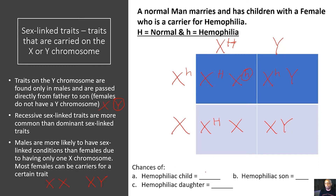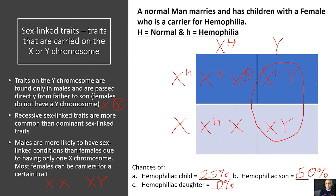The chances of having a hemophiliac child is a 25% chance — 1 out of 4. The chances of having a hemophiliac son: remember we have two sons, so it's 1 out of 2, which means a 50% chance of having a hemophiliac son. The chances of having a hemophiliac daughter is 0%, because neither of the daughters have hemophilia, though one of the daughters does carry the trait.